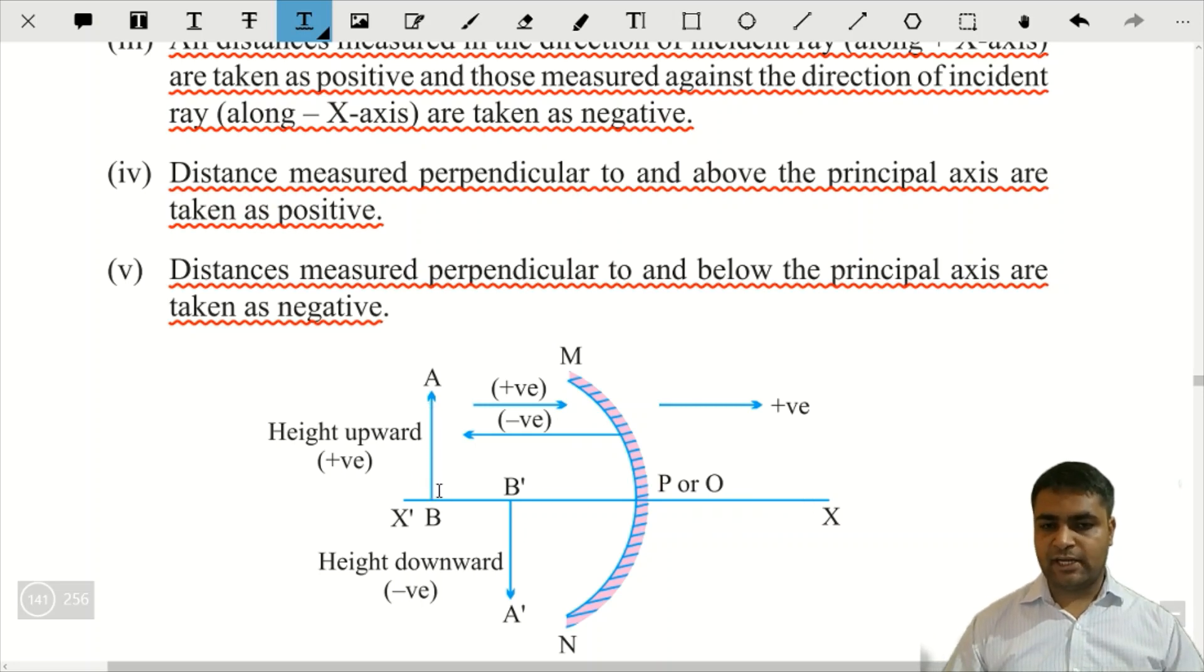Yeh haa par yeh object rakhha hai. Yeh neeche yeh image banengi, AB is the object and A dash B dash is the image. Toh agar aap dhekhen, isko integers joh apne padhe hai, classes mein, apne maths class mein, this is the origin, P is the origin.